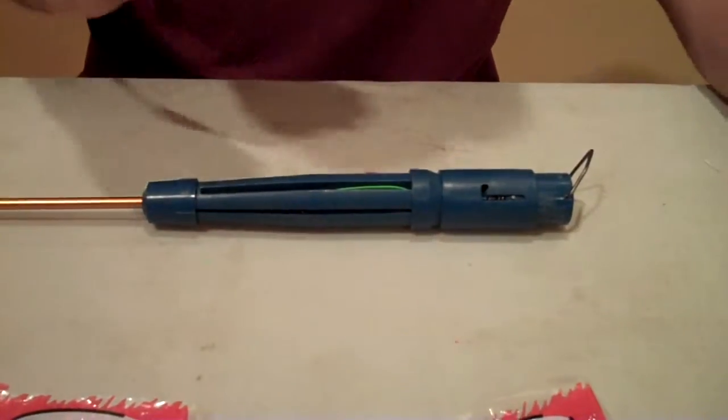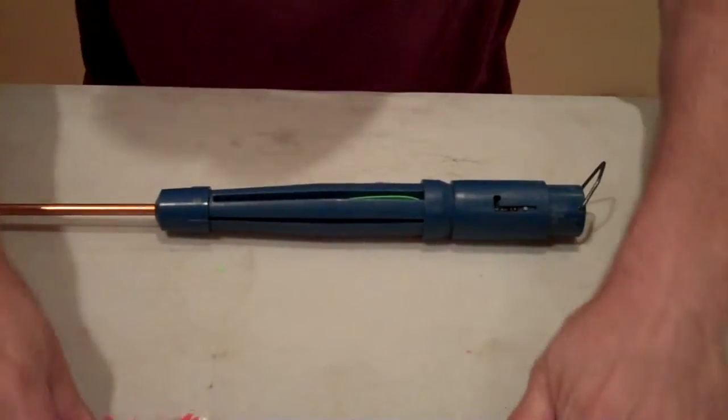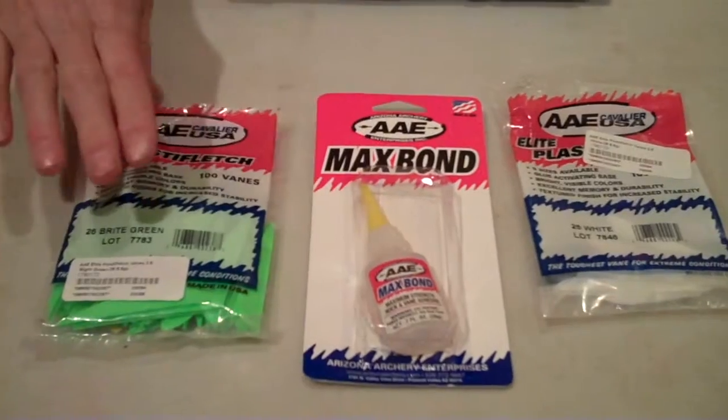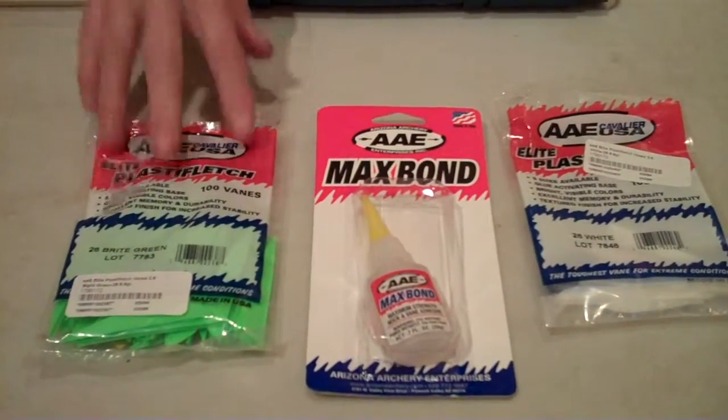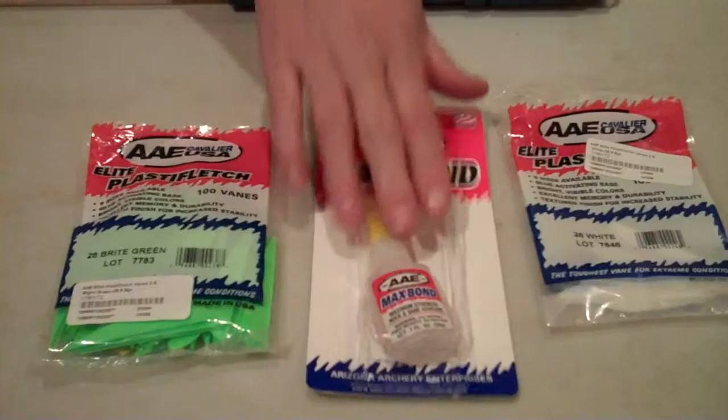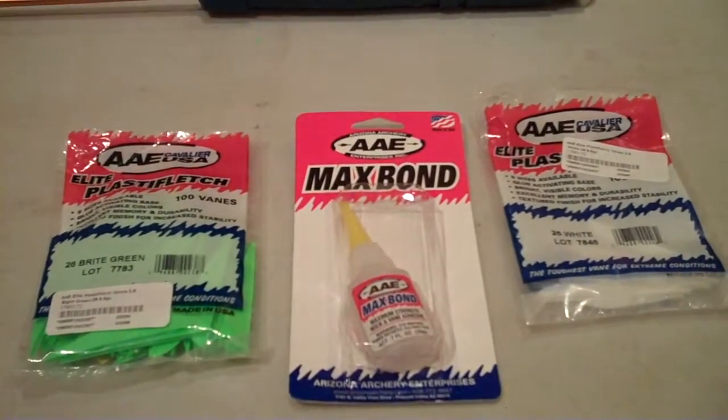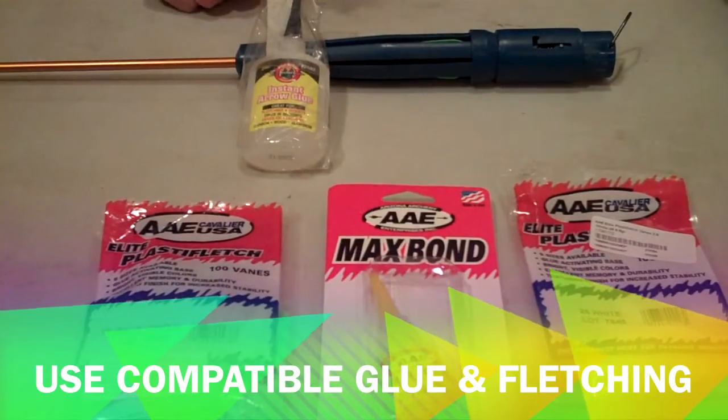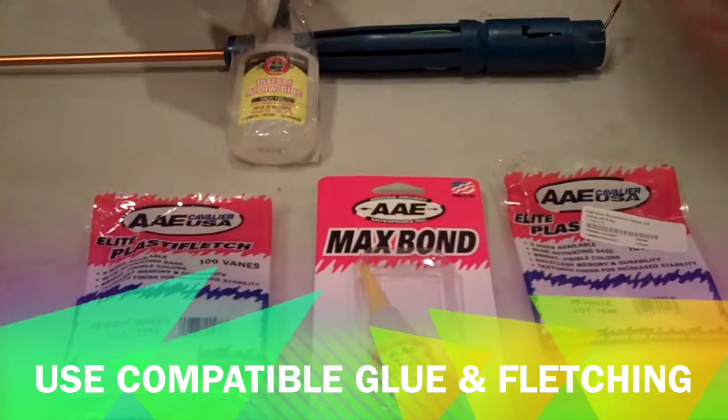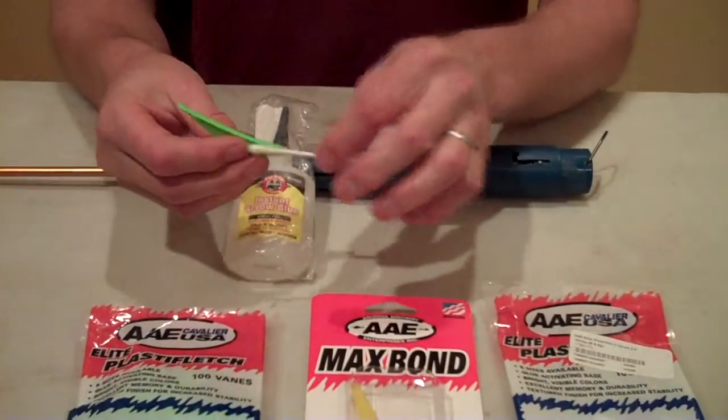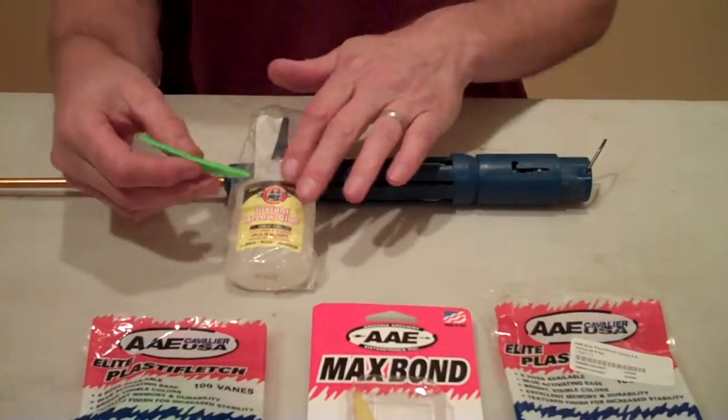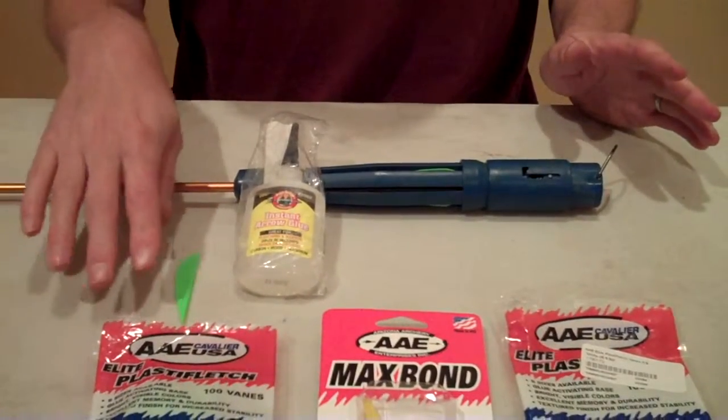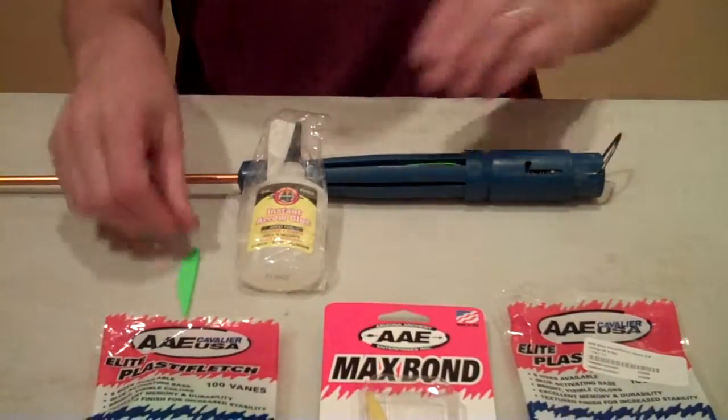Now while it's drying, we'll only let it dry for a couple of minutes. The reason we need to use AAE glue with the fletchings is because they put an activator on the fletchings that works only with their glue. If you use another make of glue on their fletchings, they will not stick. What you must do is take the fletching, get some acetone on a Q-tip, and clean that activator off. Then you can use any other glue with the AAE fletchings. If you use any other fletchings besides AAE, you can use this glue for anything like that.